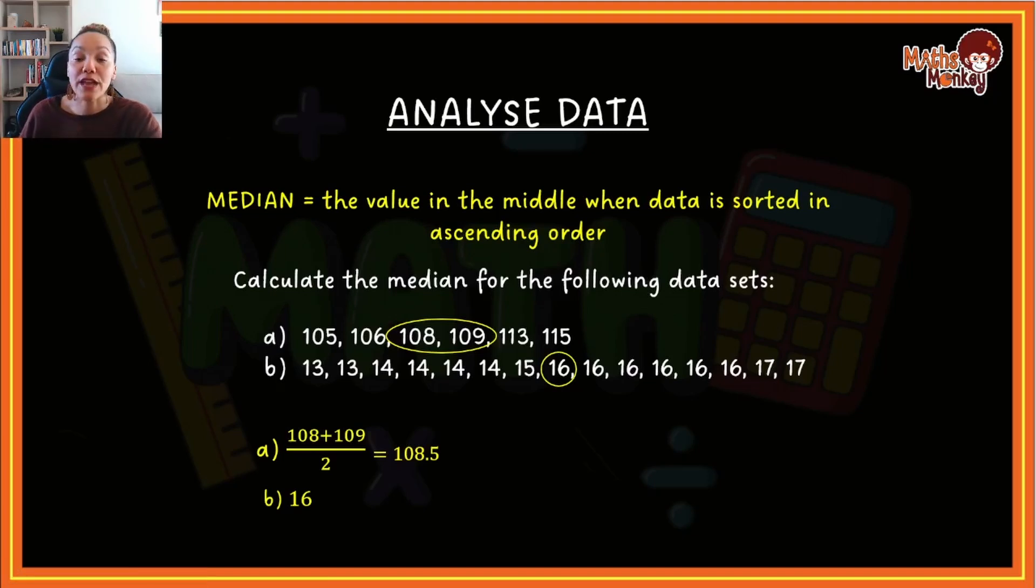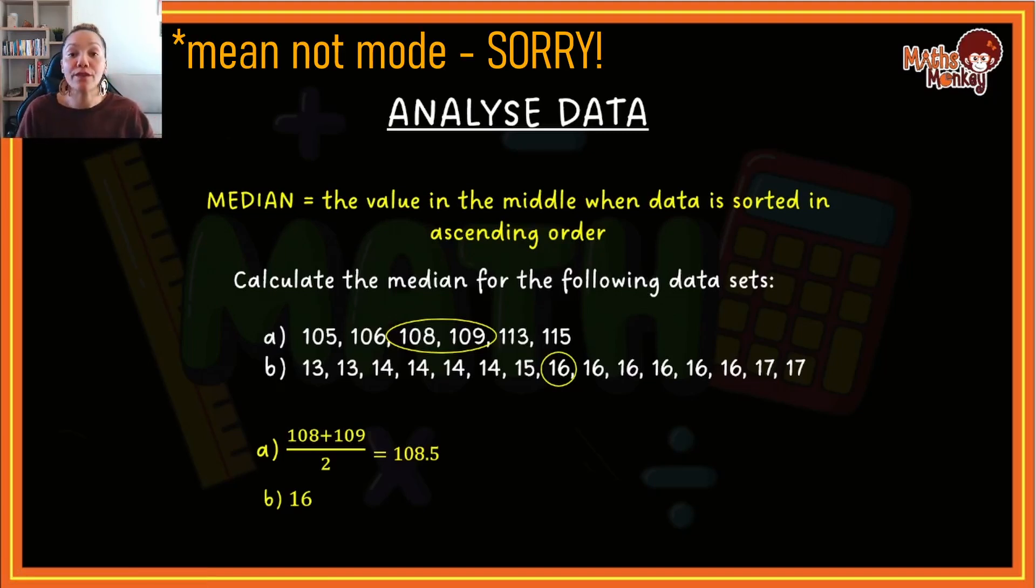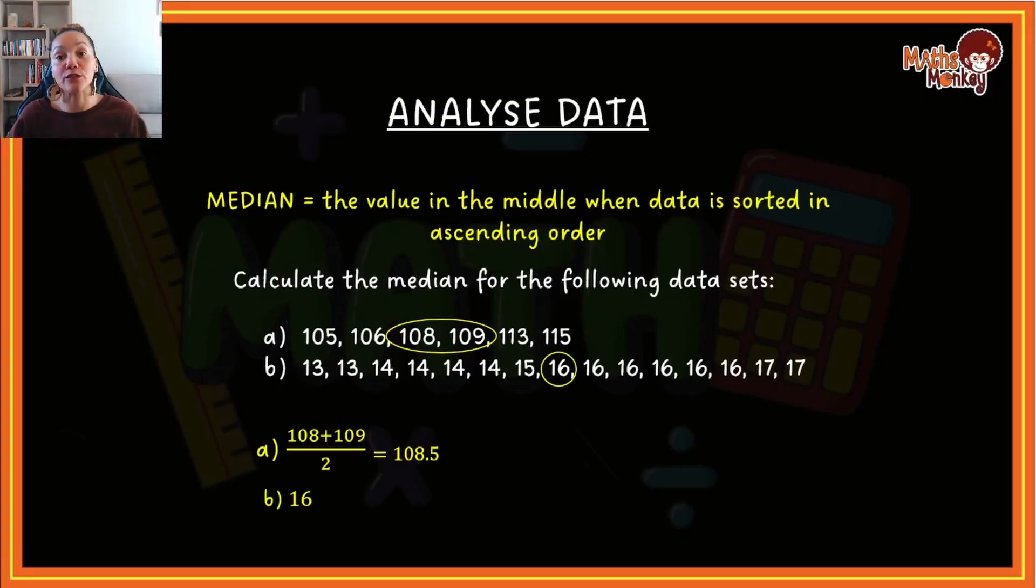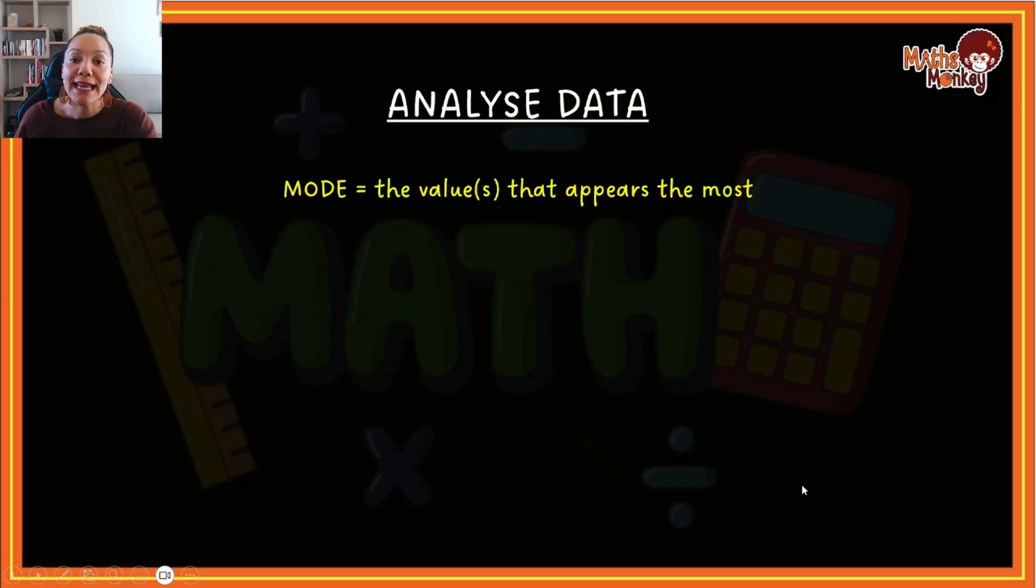So for mode we add all the values together and divide by the amount of values in the data set. For median we arrange the values in ascending order if it's not, and then we try and find the center. If we have two centers we add them together and divide by two. If we have one center, then that constitutes our answer. Let's look at mode. Mode is usually the easiest one to identify. Mode refers to the value or values that appear the most.